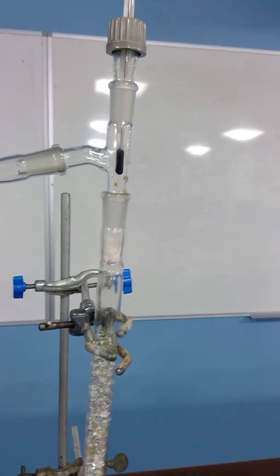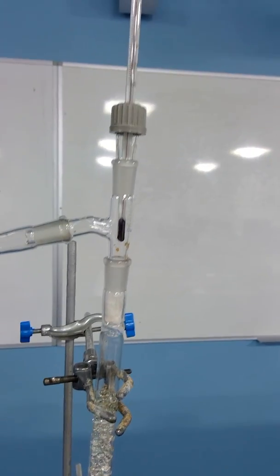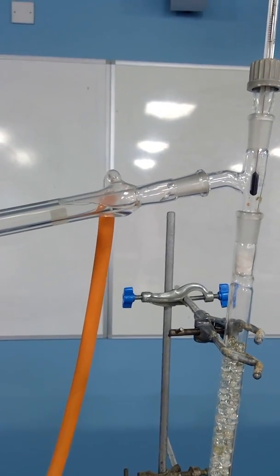The temperature at which the vapors pass across on heating is measured using the thermometer at the top. This is then attached to a Liebig condenser.